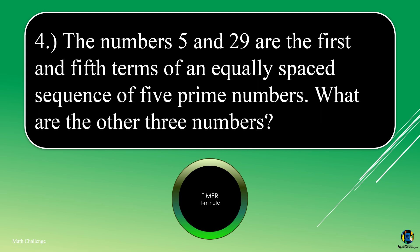15 and 29 are the first and fifth terms of an equally spaced sequence of five prime numbers. What are the other three numbers? Go!